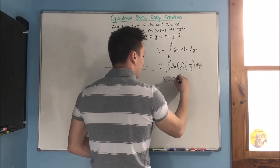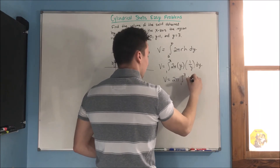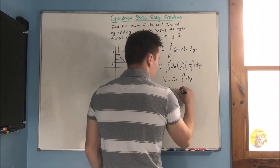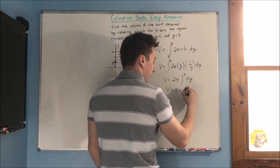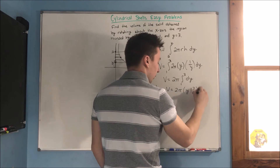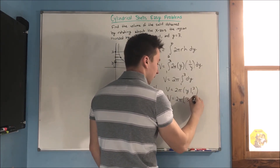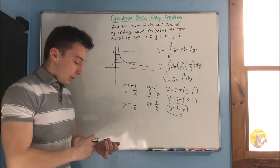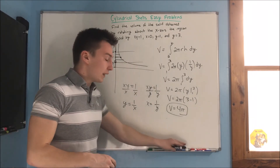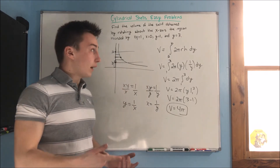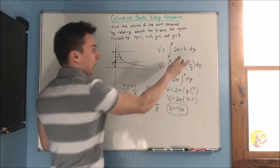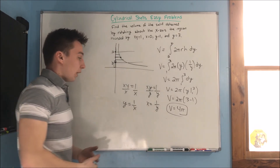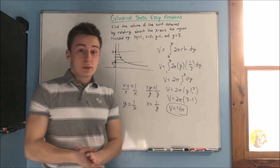We get that the volume equals 2π times the integral from 1 to 3 of y times 1 over y, dy. The y and 1 over y simplify to 1, so this becomes one of the easiest integrals: 2π times y, evaluated from 1 to 3. So volume equals 2π times (3 minus 1), which is 4π. The key trick here is that we integrated with respect to y because we revolved around a horizontal line, the radius was y, and the height was our function in terms of y, which was 1 over y.